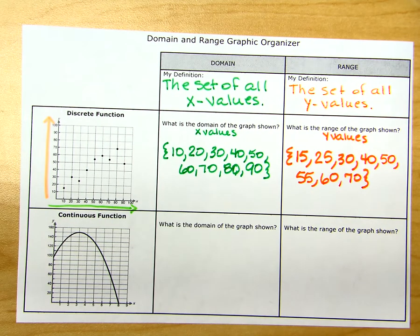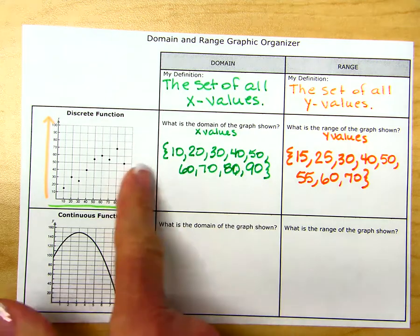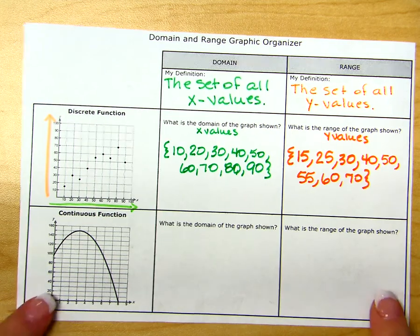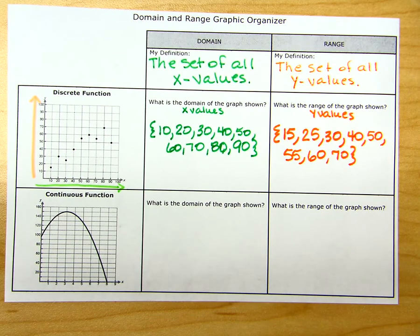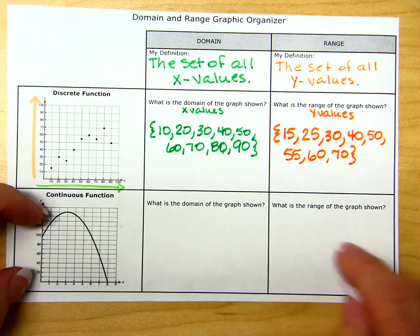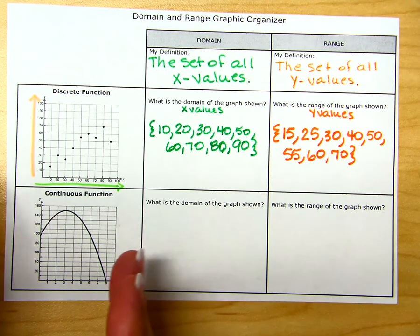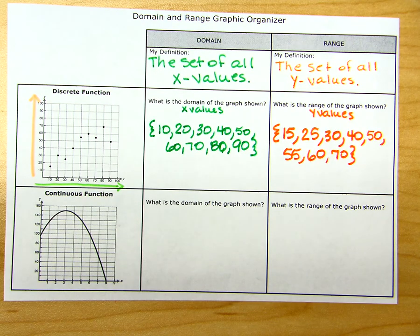Because it is a discrete function, you must show your set as a list of numbers, and we show that set by using braces. With a continuous function, we are looking at how far up and how far down the graph goes for the range, and how far left and how far right for the domain. We want all the numbers in between — all those little decimals and fractions.